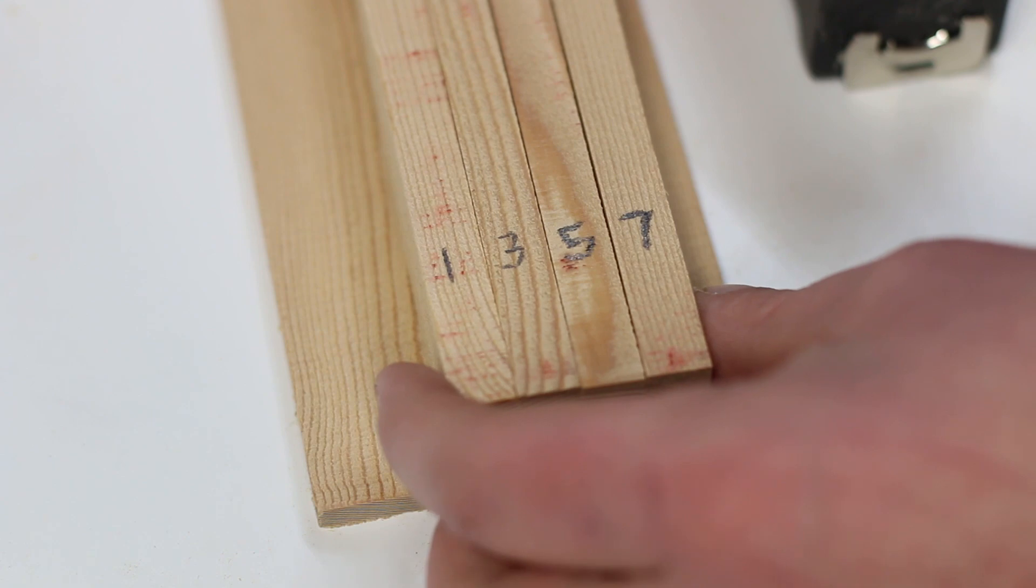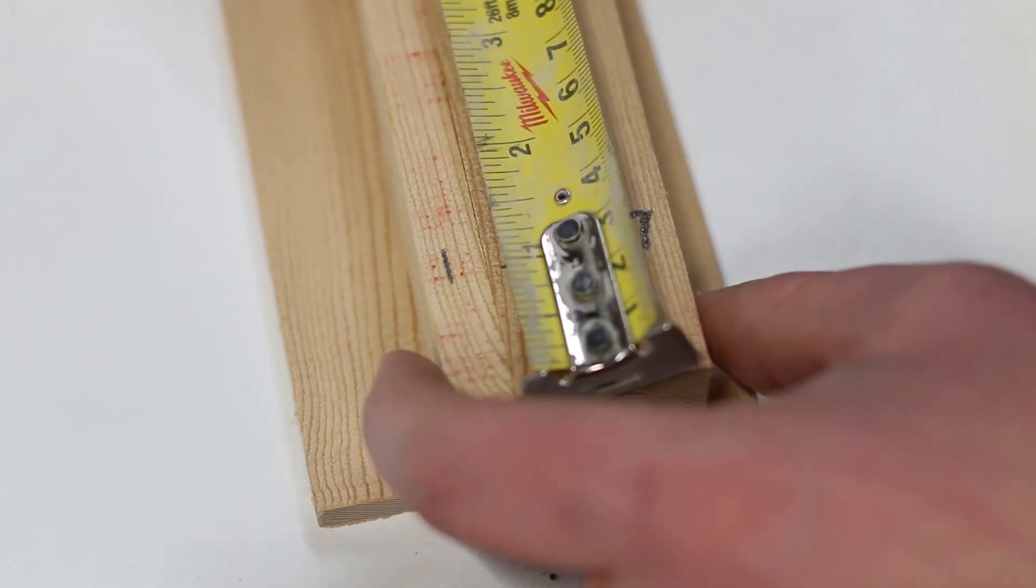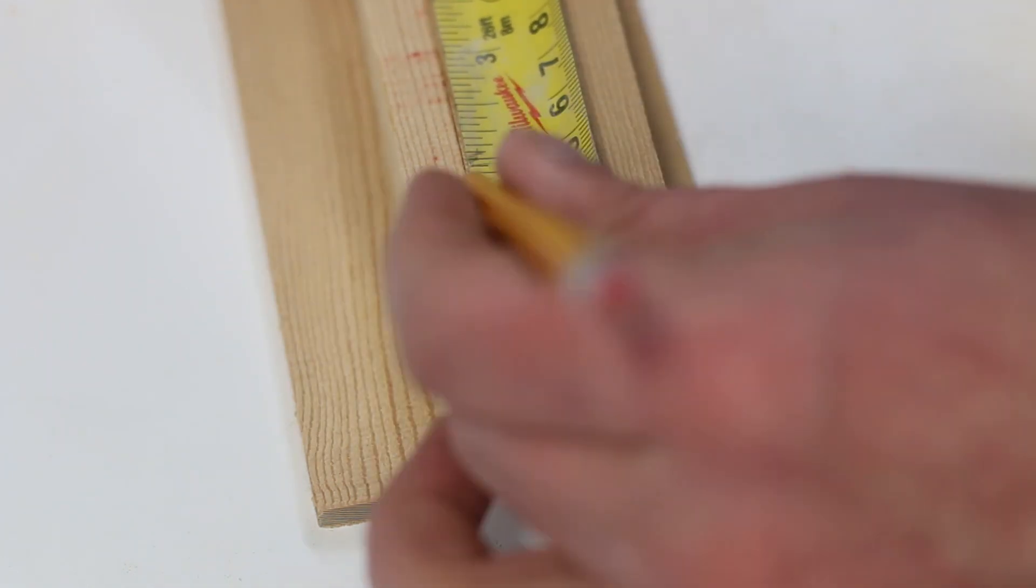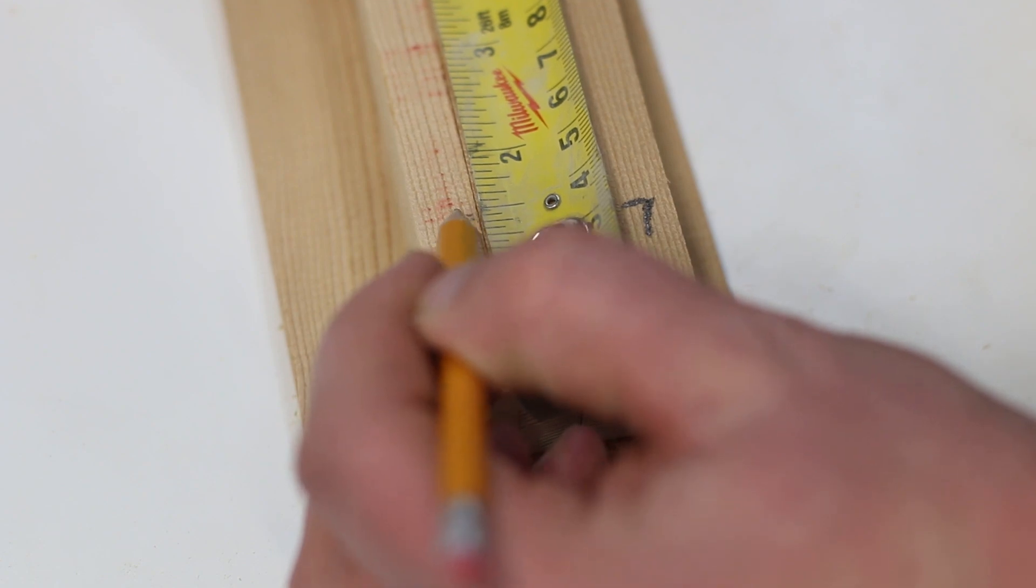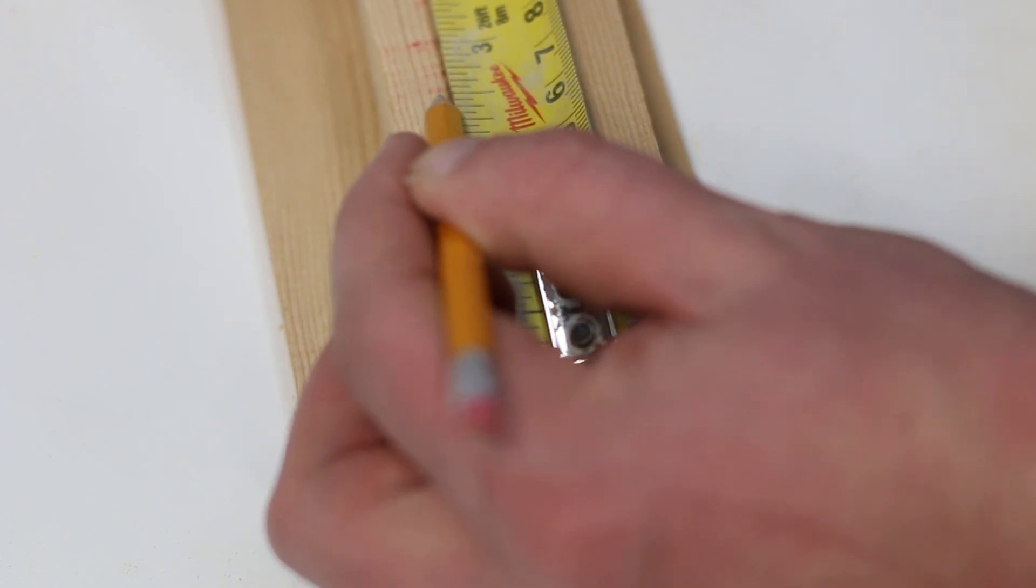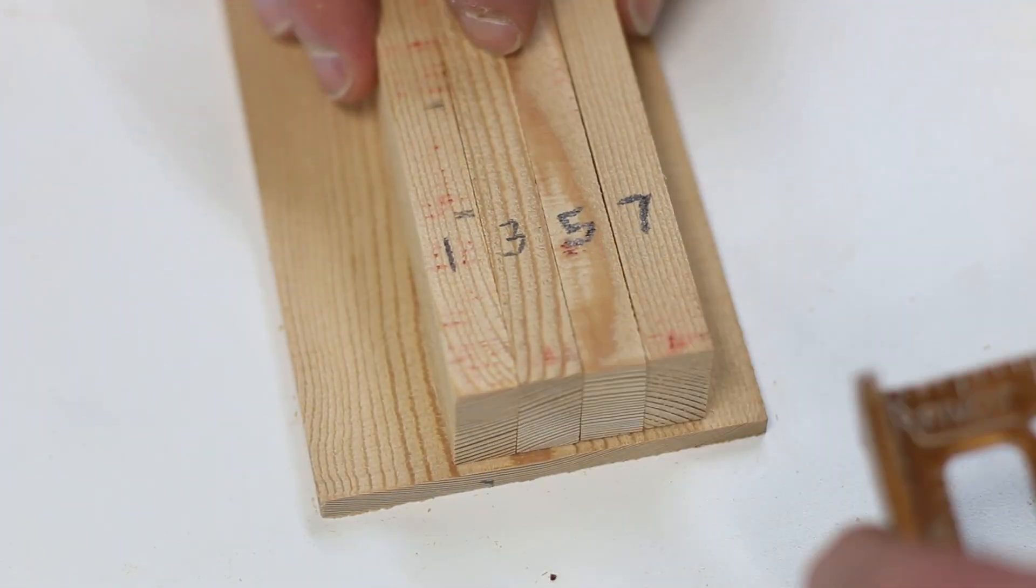I started by marking out the slot that the deadbolt will ride in. I wanted the slot 1 and a half inches from the bottom and 1 inch wide. So I made marks at 1 and a half and 2 and a half inches and finished the line with a square.